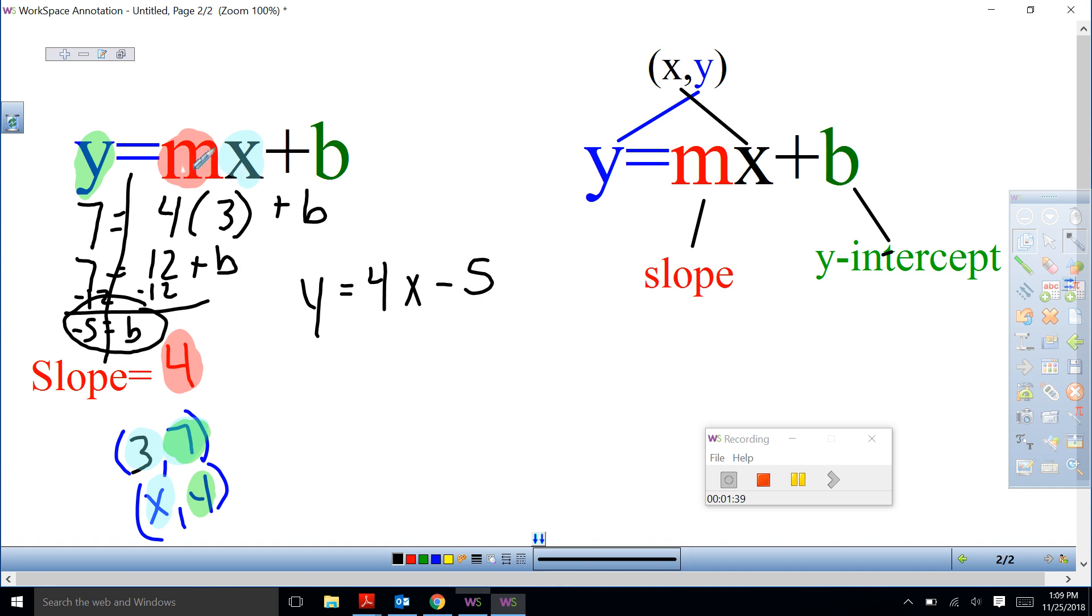If they give me a slope and an X and Y, I can plug in those three things and solve for the B, which is the Y intercept, by using variable alone, opposite operation, both sides, equal sign.